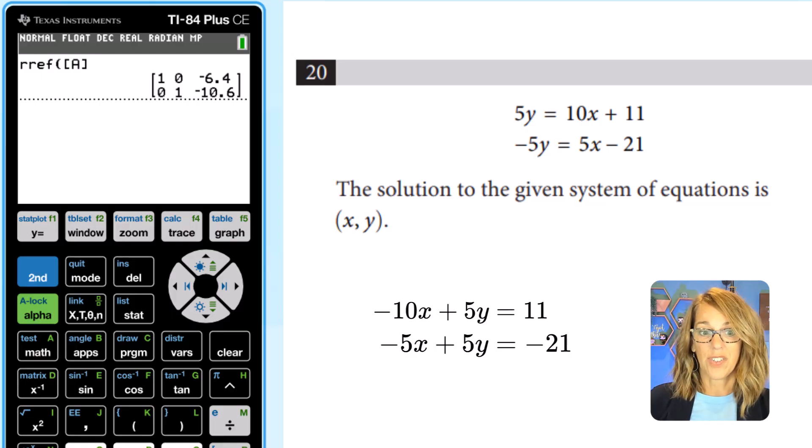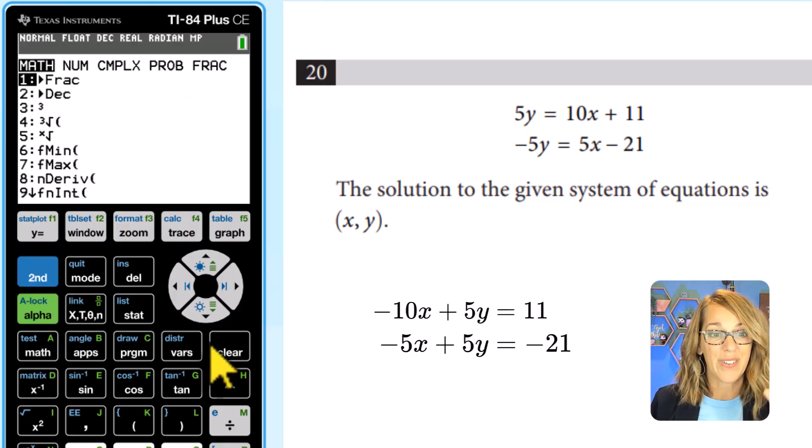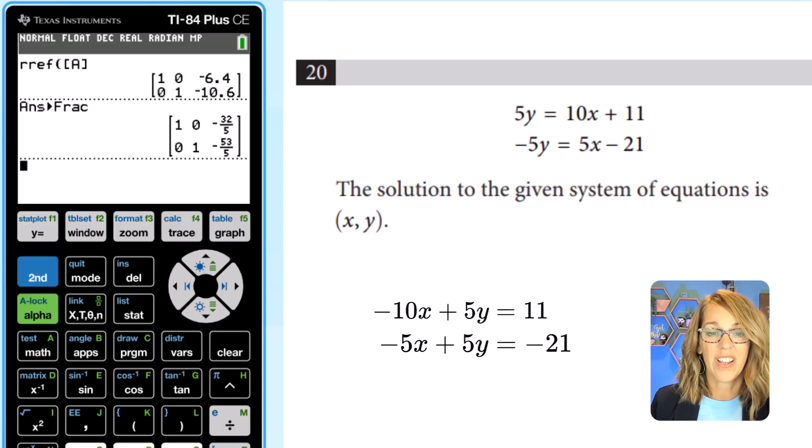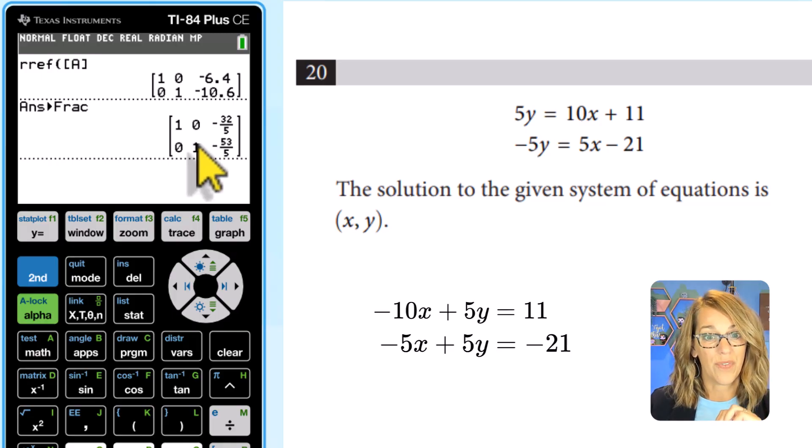Now my answers are negative 6.4 and negative 10.6. Say you needed your answers as fractions. All I've got to do is to go to that math menu and I'm going to do convert to fraction. Choice number one there. Hit enter and then enter again. And we've got our answers now as fractions. X is equal to negative 32 fifths. Y is equal to negative 53 fifths.